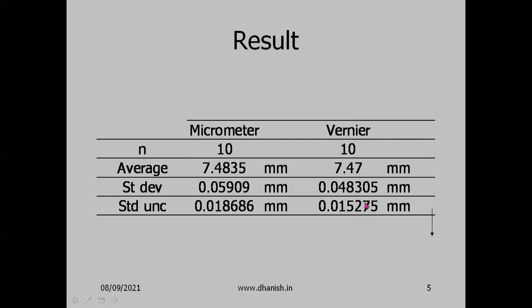When you compare the micrometer with vernier, we get a very peculiar result. Standard uncertainty with micrometer was 0.018mm whereas with vernier it is only 0.015mm.